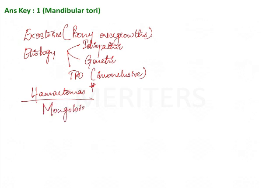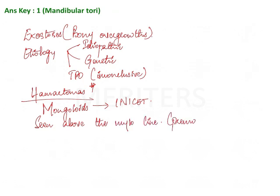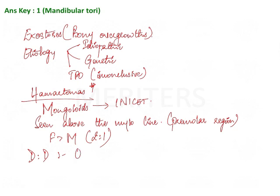This is more commonly asked in INICET. They are seen above the mylohyoid line in the premolar region. Females are more commonly affected than males in the ratio of 2 to 1. One more thing to remember: the differential diagnosis for this is osteomas.